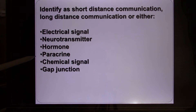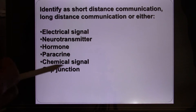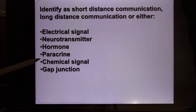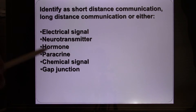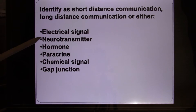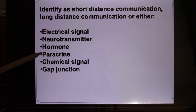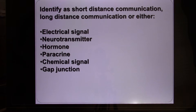Chemical signal is the summation for all the chemical ligands — like neurotransmitters, hormones, and paracrine signals. They all belong to the chemical signal category.